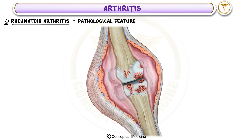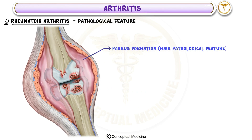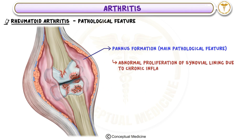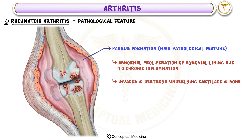Pathological Feature: The main pathological feature of rheumatoid arthritis is pannus formation — abnormal proliferation of the synovial lining due to chronic inflammation. The pannus invades and destroys the underlying cartilage and bone, leading to joint deformities and loss of function.